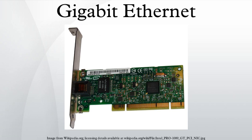LX, or ZX. IEEE 802.3ab, ratified in 1999, defines Gigabit Ethernet transmission over unshielded twisted pair Category 5, 5E, or 6 cabling and became known as 1000BASE-T. With the ratification of 802.3ab, Gigabit Ethernet became a desktop technology as organizations could use their existing copper cabling infrastructure. IEEE 802.3ah, ratified in 2004, added two more gigabit fiber standards: 1000BASE-LX10 and 1000BASE-BX10, as part of a larger group of protocols known as Ethernet in the First Mile.